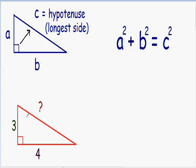Let's get started with our example. Here we have a right triangle, so we can use the Pythagorean theorem to find all the sides. We have one side with a length of three, another side with a length of four, and the third side we don't know — that's what we're trying to find out. So the first thing we need to do is find out which side is our longest side, which side is the hypotenuse, because the hypotenuse has to be our c.